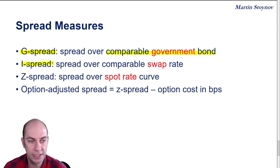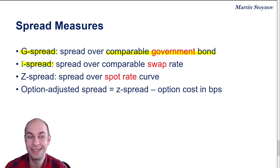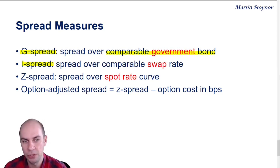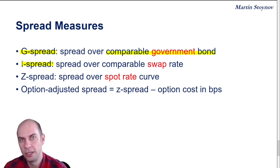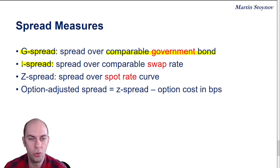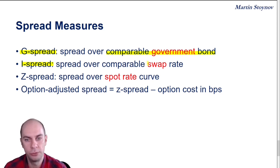I spread here. The letter I stands for interpolated. So here we're looking at the corporate yield over and above the comparable swap rate.